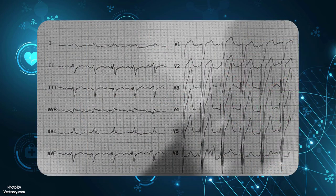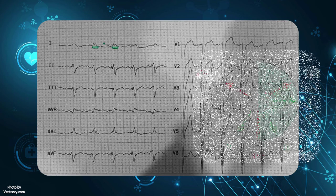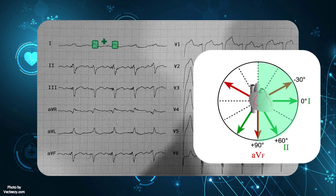In the third example, lead 1 is positive but lead 2 is negative, so left axis deviation is present.